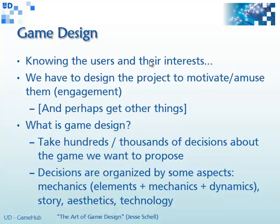If we are designing a serious game, as we will see in the next chapter, we should also take into consideration other things: content to be learned, skills to be developed and trained. So, what is game design? The organized and creative process of taking thousands of decisions about the game we want to develop — how it is going to work in every situation, every detail. Game design is very much like movie scripting or literature writing, but with more levels of difficulty and dynamic behavior. Those decisions should be very organized. It is not the only way of structuring, but there are some usual aspects: mechanics, elements, dynamics, story, aesthetics, technology.